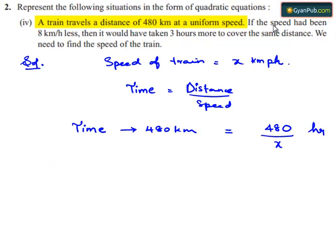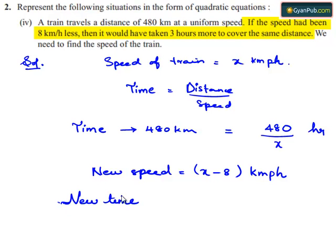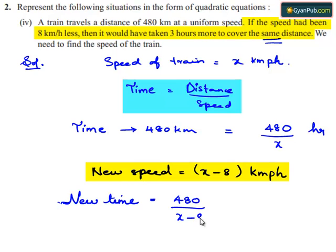Now the speed is reduced by 8 km per hour, so the new speed becomes x minus 8 km per hour. The new time taken to cover the same distance of 480 km at this reduced speed is 480 divided by x minus 8.